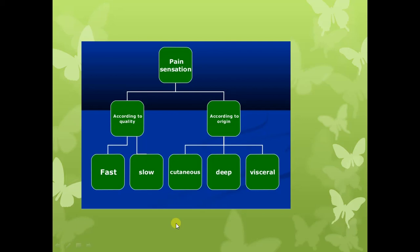Pain sensation can also be classified according to the region. According to quality it can be fast or slow, and according to the region of origin it can be superficial or cutaneous pain, or deep or visceral pain. These are different ways to divide pain into different types.